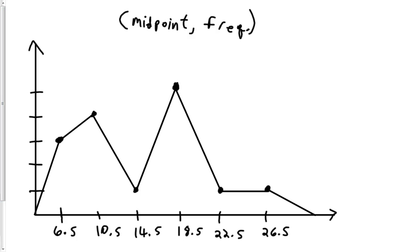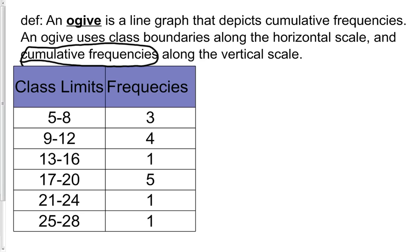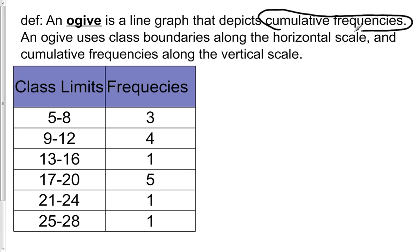The next objective is to create an ogive. An ogive is a line graph that depicts cumulative frequencies. The vertical scale will represent cumulative frequency, not just frequency. Also, an ogive uses the class boundaries — not the class midpoints like we just did — for the horizontal scale. So we need to find our class boundaries and our cumulative frequencies.